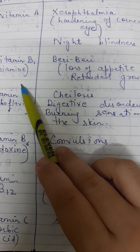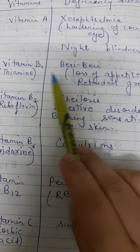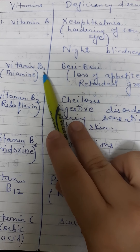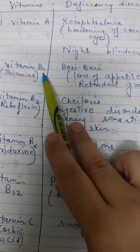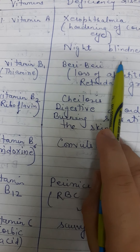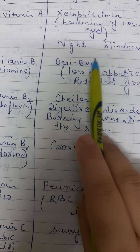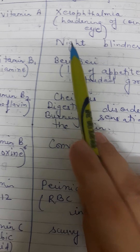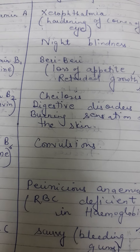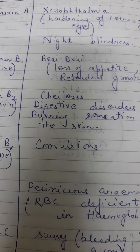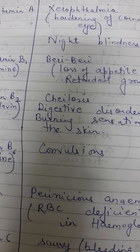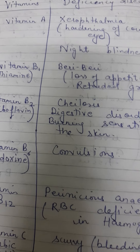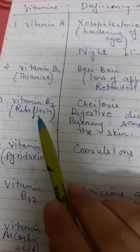Vitamin B1, also known as thiamine, is present in green vegetables and milk. Its deficiency disease is beriberi. The symptoms of beriberi include loss of appetite, retarded growth, and digestive discomfort.